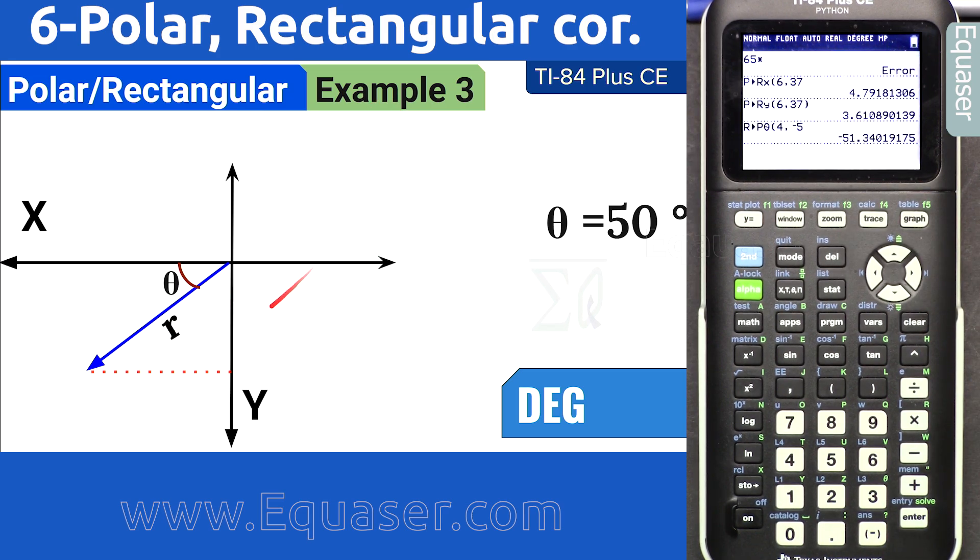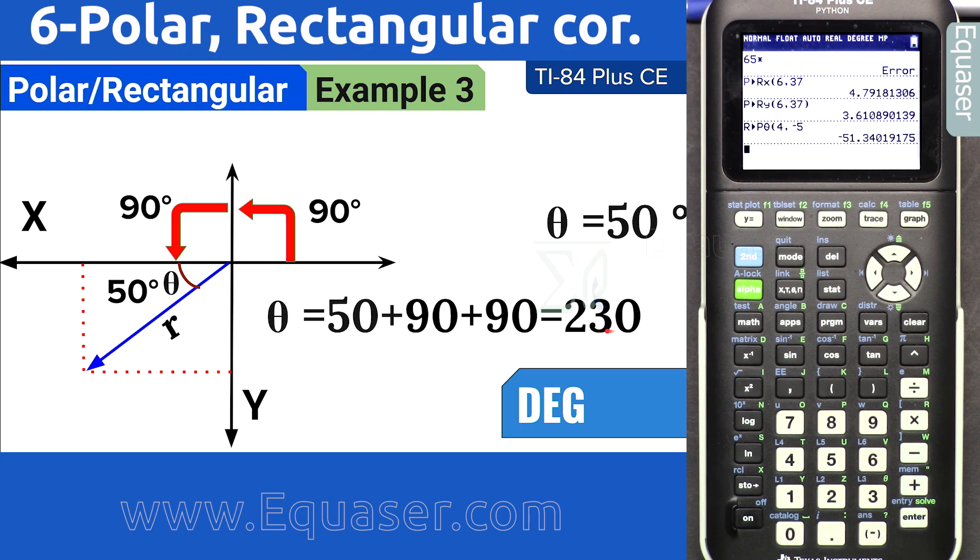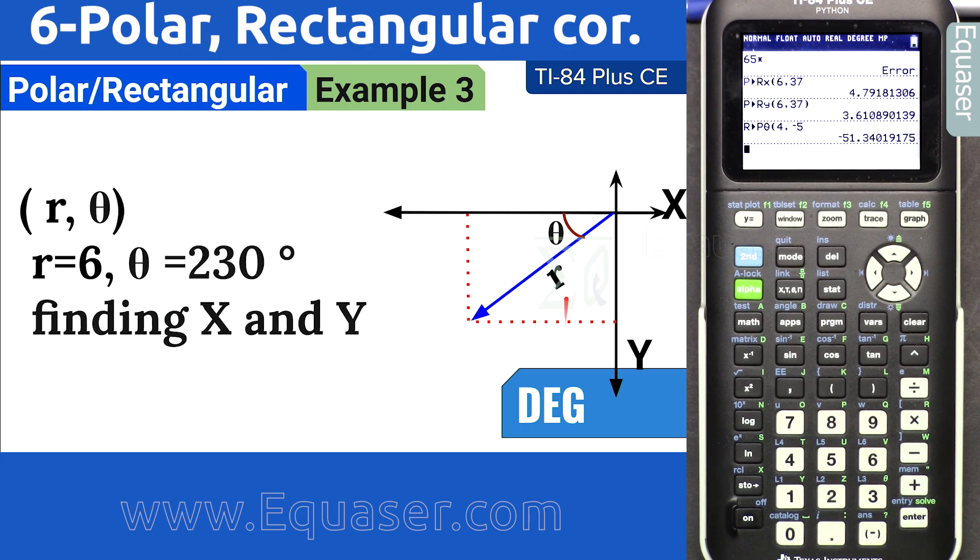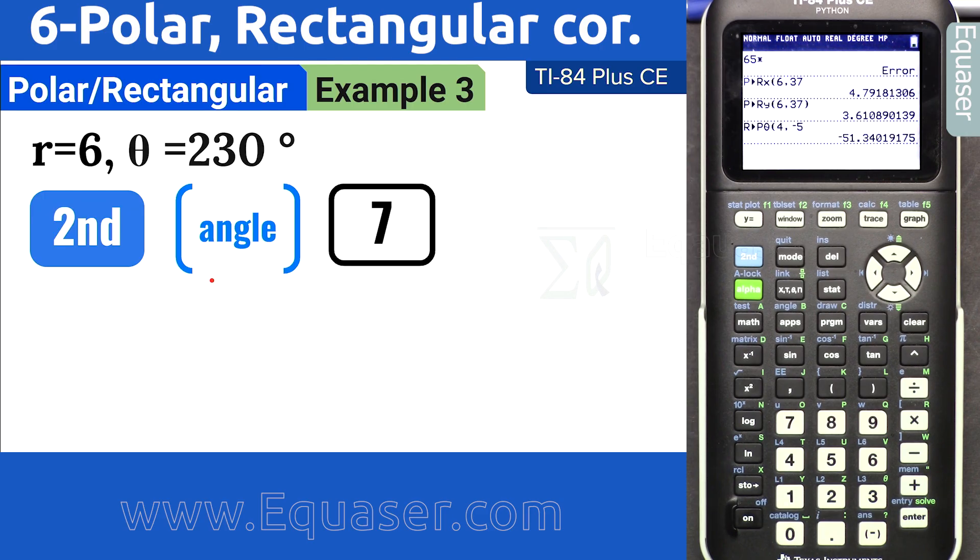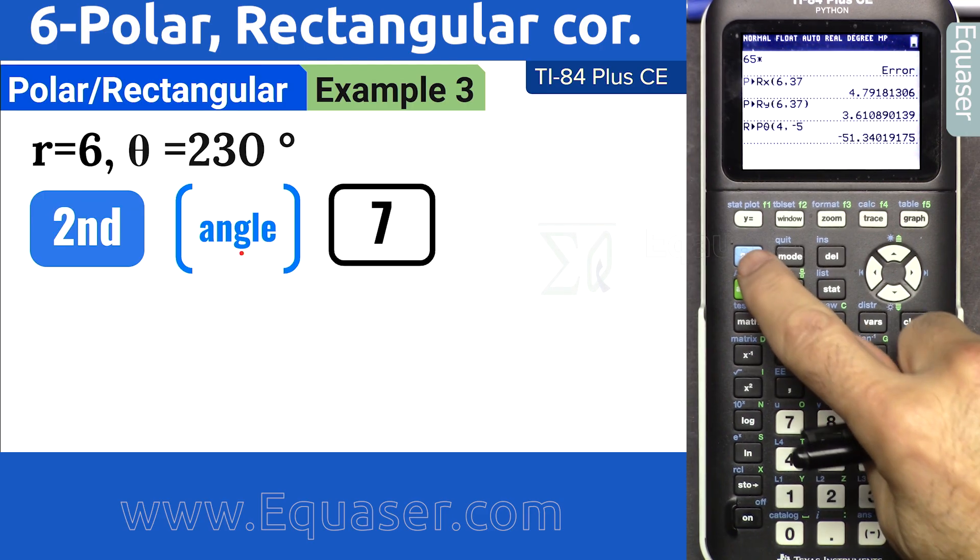Because we have first quadrant 90 degrees and then 90 degrees and then 50. So we have to add them all together before entering it. So our angle is now 230 degrees.